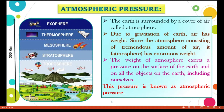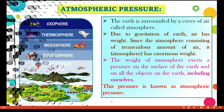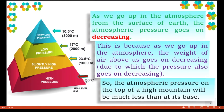Look at this diagram. The atmosphere is made up of different layers, starting from the troposphere, stratosphere, mesosphere, thermosphere, and exosphere. It extends up to 30 kilometres from the surface of the earth. As we go up in the atmosphere from the surface of the earth, the atmospheric pressure goes on decreasing.